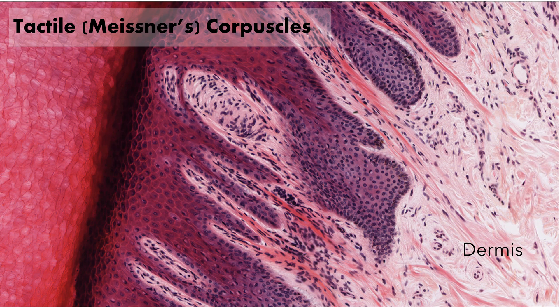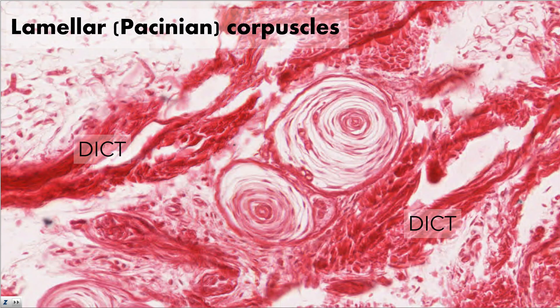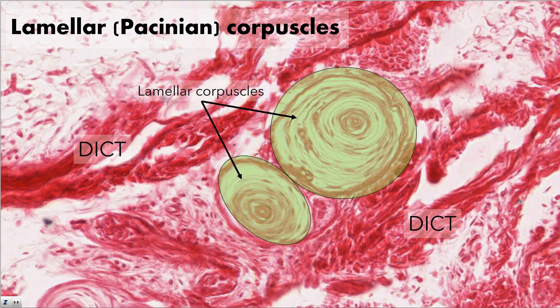Let's examine several nervous structures found in the integument. The first of these is the tactile or Meissner's corpuscle. Here we can see the dermis to the right and the stratum basale, stratum spinosum, and stratum granulosum to the left. Located in the dermal papillae throughout the body are tactile corpuscles. Tactile corpuscles have a twisted cone-like shape and are used for light touch. Lamellar or Pacinian corpuscles are located much deeper in the dermis — generally found in the reticular layer surrounded by dense irregular connective tissue. They have a look similar to that of a cut onion, with visible layers or lamellae surrounding the central stalk, which is the nerve ending. Lamellar corpuscles are used in sensing deep pressure, such as when someone pokes you.